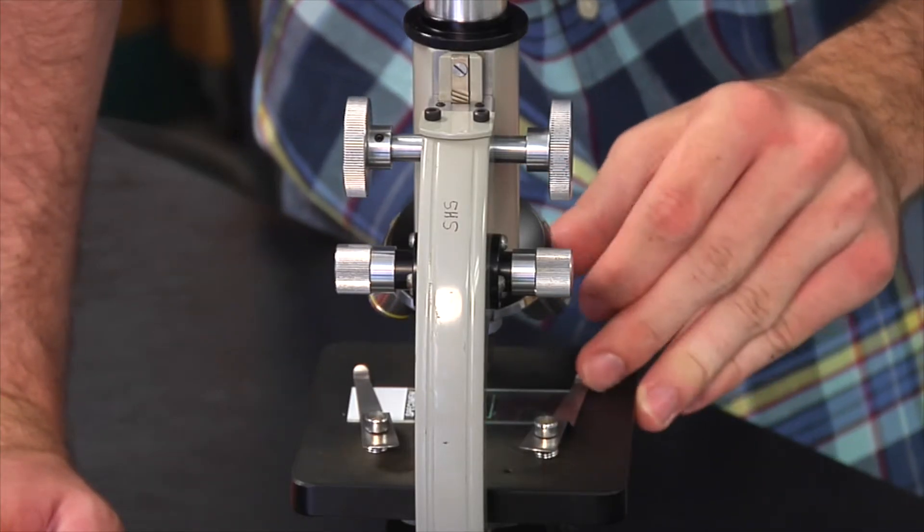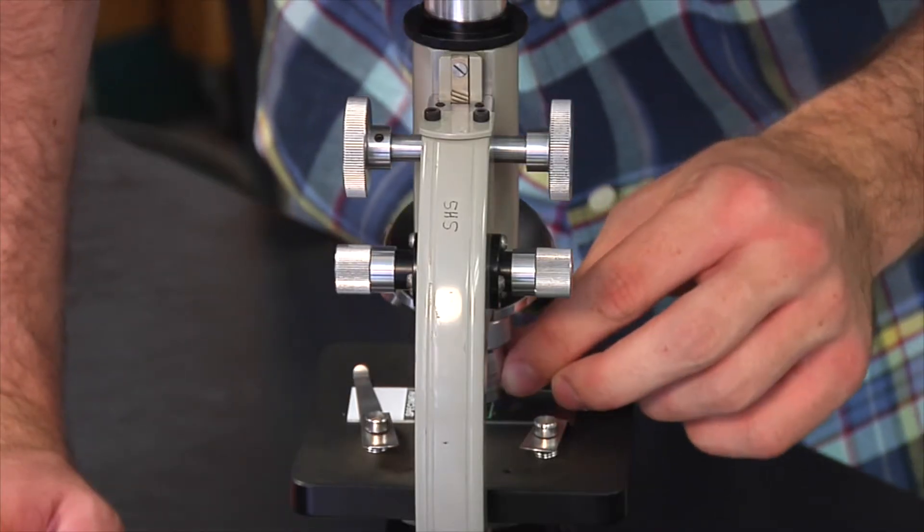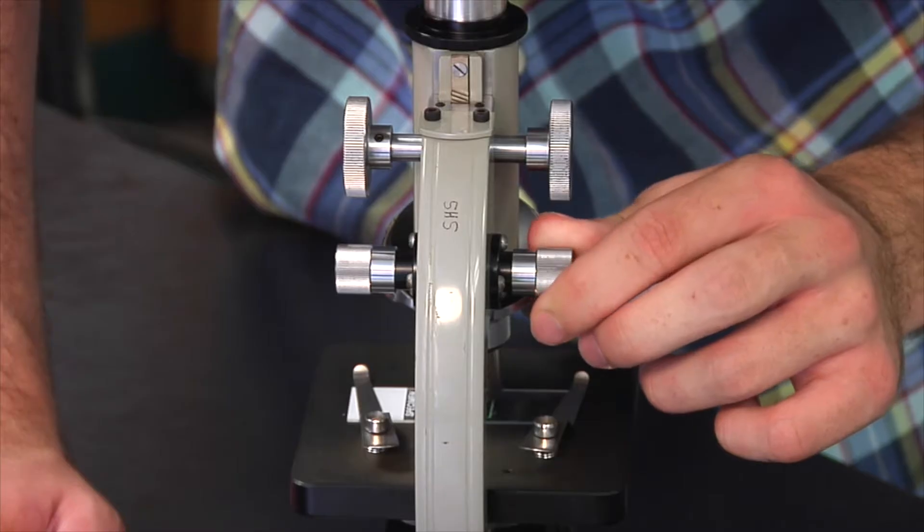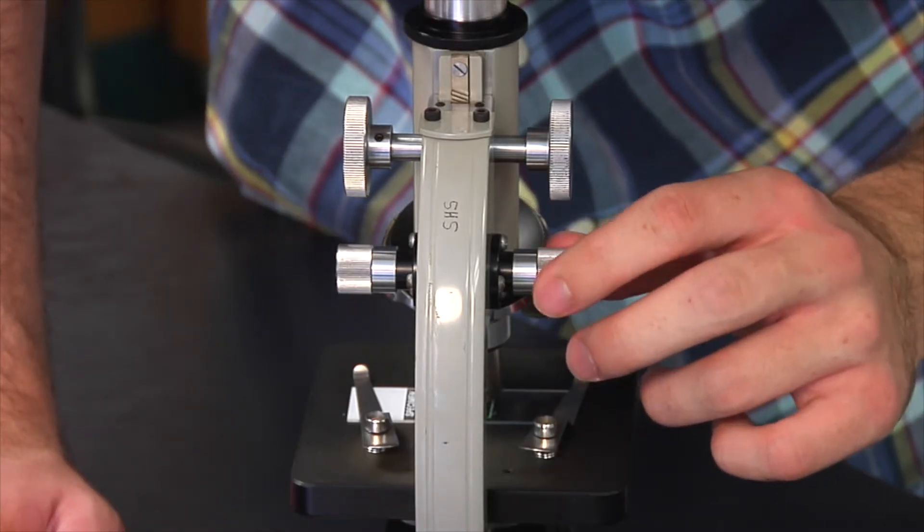Once the specimen is in focus, rotate the objective lenses to view the specimen at higher magnifications. To get the best view, use the fine adjustment knob each time the magnification is changed.